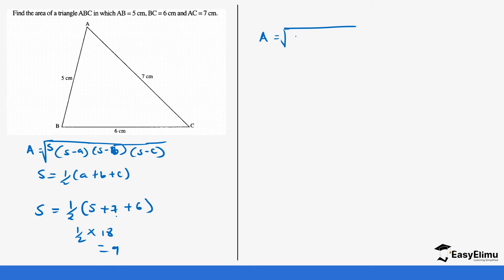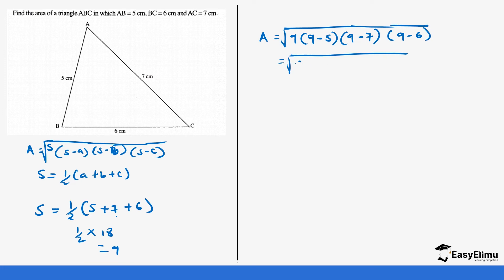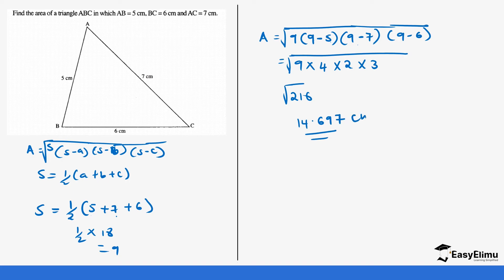Now we incorporate this into our formula. The area is √(9 × (9−5) × (9−7) × (9−6)), which is √(9 × 4 × 2 × 3). Multiplying the values inside: 9 × 4 × 2 × 3 = 216, so we take the square root of 216, which gives us 14.697. The area is 14.697 cm². Make sure you leave your answer in the correct unit.